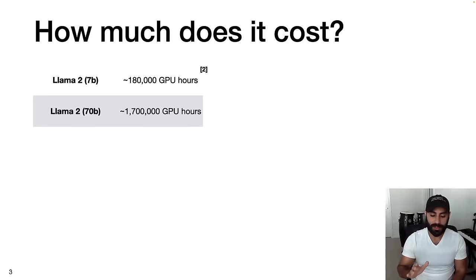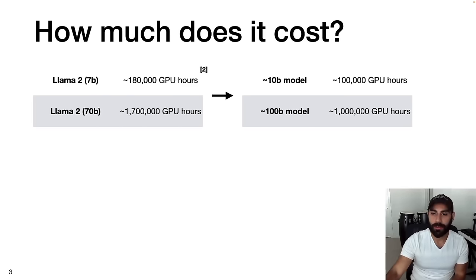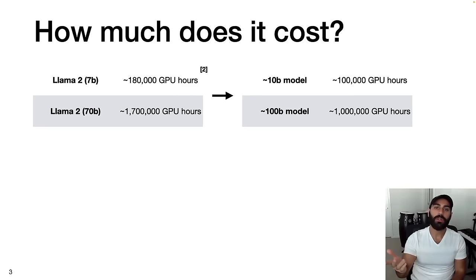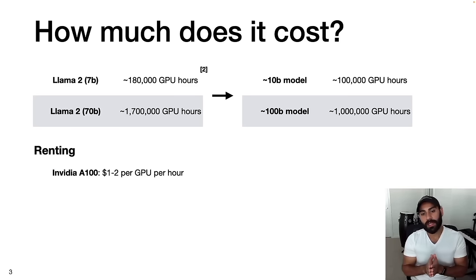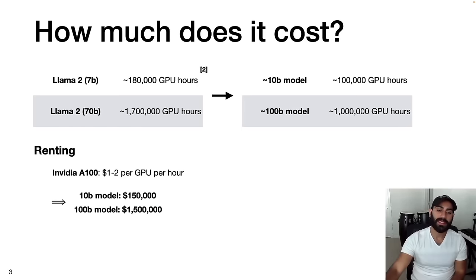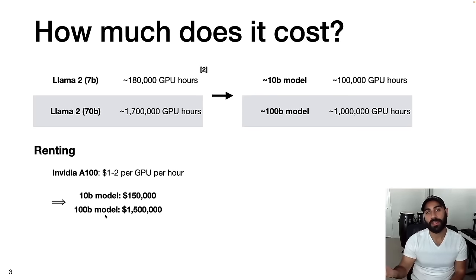If we just take orders of magnitude based on the Llama 2 numbers, we can say a 10 billion parameter model takes on the order of 100,000 GPU hours to train, while a 100 billion parameter model takes about a million GPU hours. So how do we translate this into a dollar amount? We can rent the GPUs via any of the big cloud providers. An NVIDIA A100, which was used to train Llama 2, is going to be on the order of one to two dollars per GPU per hour. That means the 10 billion parameter model is on the order of $150,000 just to train, and the 100 billion parameter model will be on the order of $1.5 million.